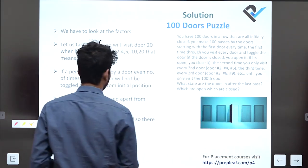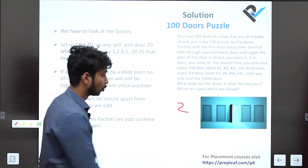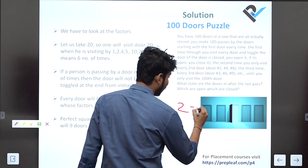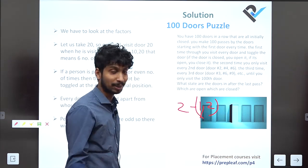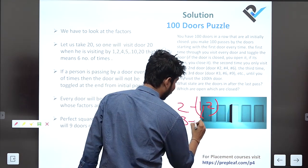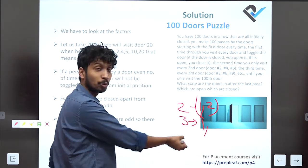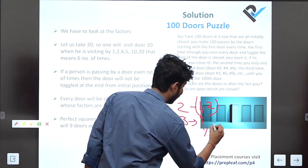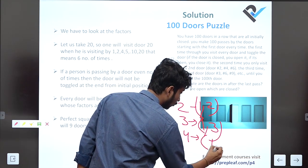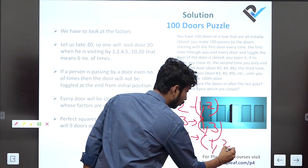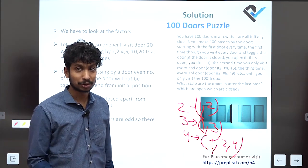For example, let's look at door 2. How many times will we visit it? We will visit door 2 when selecting every first door and every second door, and never otherwise. For door 3, we visit on pass 1 and pass 3. For door 4, we visit on pass 1, 2, and 4. So we visit a door as many times as it has factors.